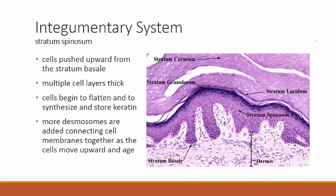As cells are pushed upward from the stratum basale, they become stratum spinosum cells. Here the cells begin to synthesize and store keratin — the more keratin produced, the flatter the cell becomes. More and more desmosomes are added to connect the cell membranes together as cells move upward and begin to age. This is a zone of very rapid keratin production.